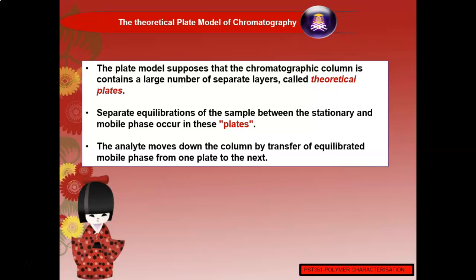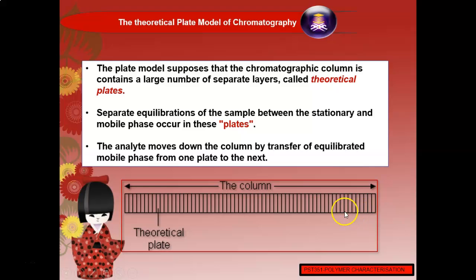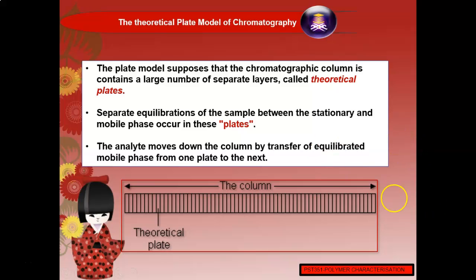Separate equilibrations of the sample between the stationary and mobile phase occur in these plates. The analyte moves down the column by transfer of equilibrated mobile phase from one plate to the next. Inside the column there are several theoretical plates — on the order of thousands of theoretical plates within a single column.